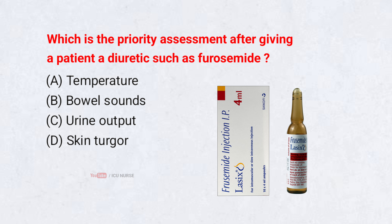Which is the priority assessment after giving a patient a diuretic such as furosemide? A. Temperature. B. Bowel sounds. C. Urine output. D. Skin turgor. Correct answer: C. Urine output.